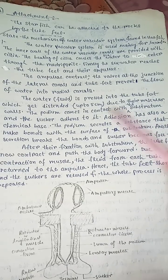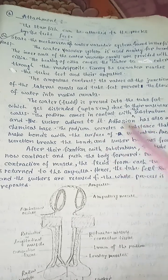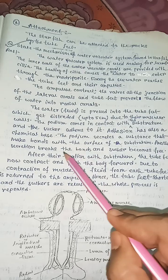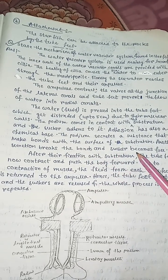Adhesion has also a chemical base. The podium secretes a substance that makes bonds with the surface of substratum. Another secretion breaks the bonds and the sucker becomes free.